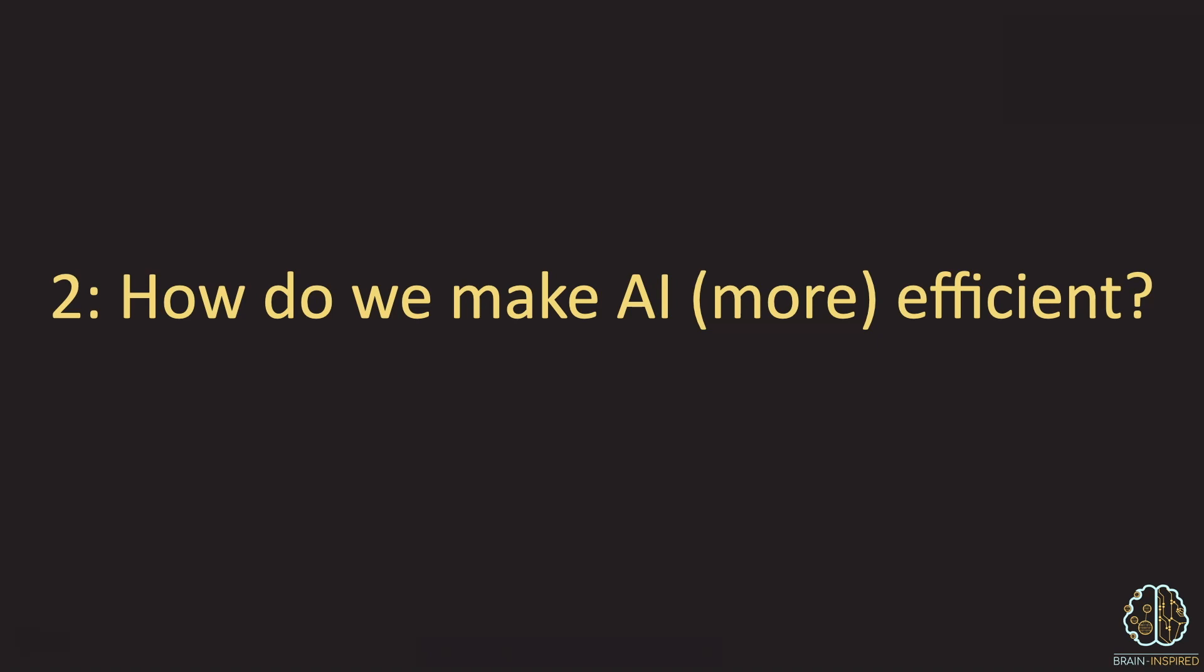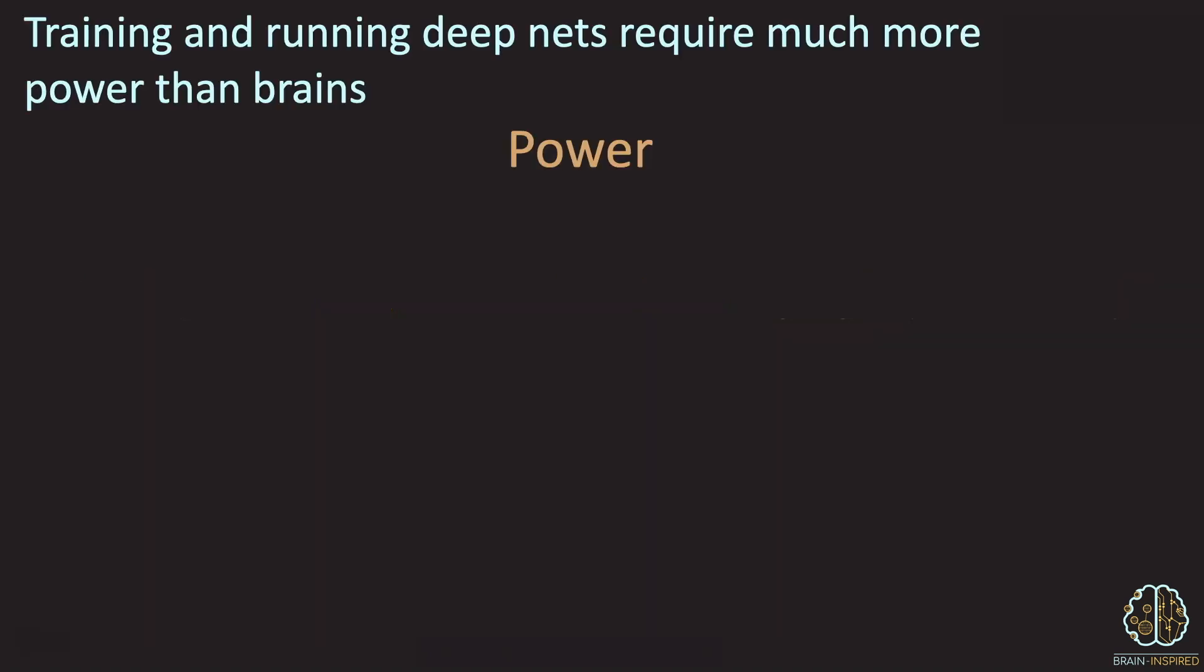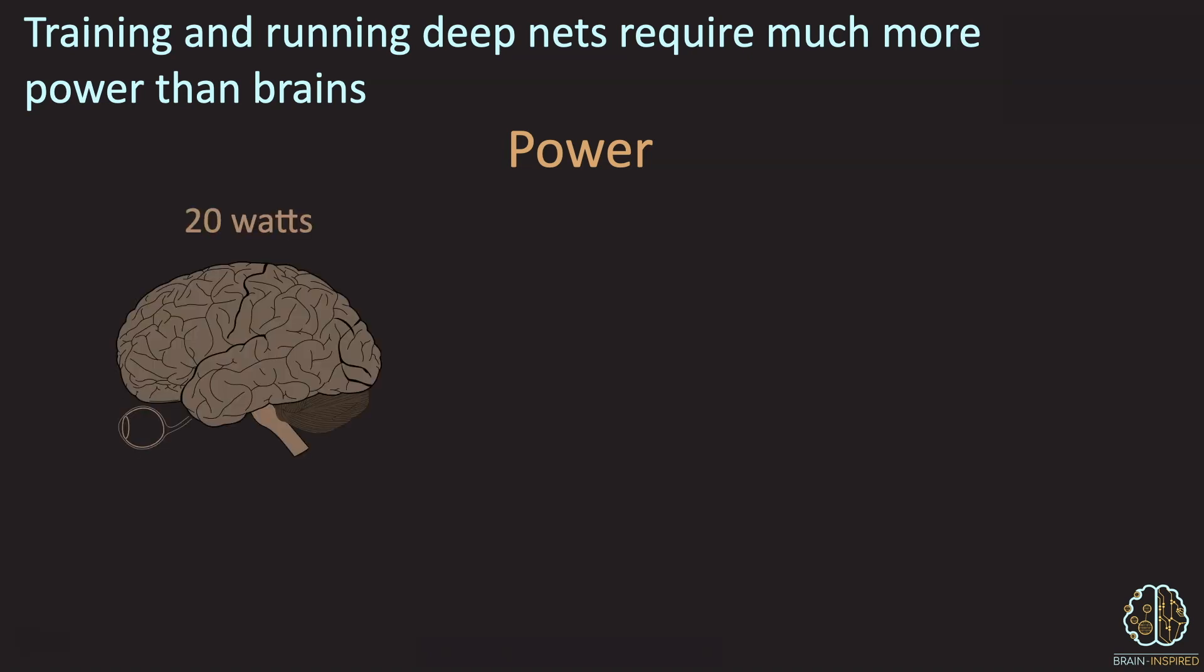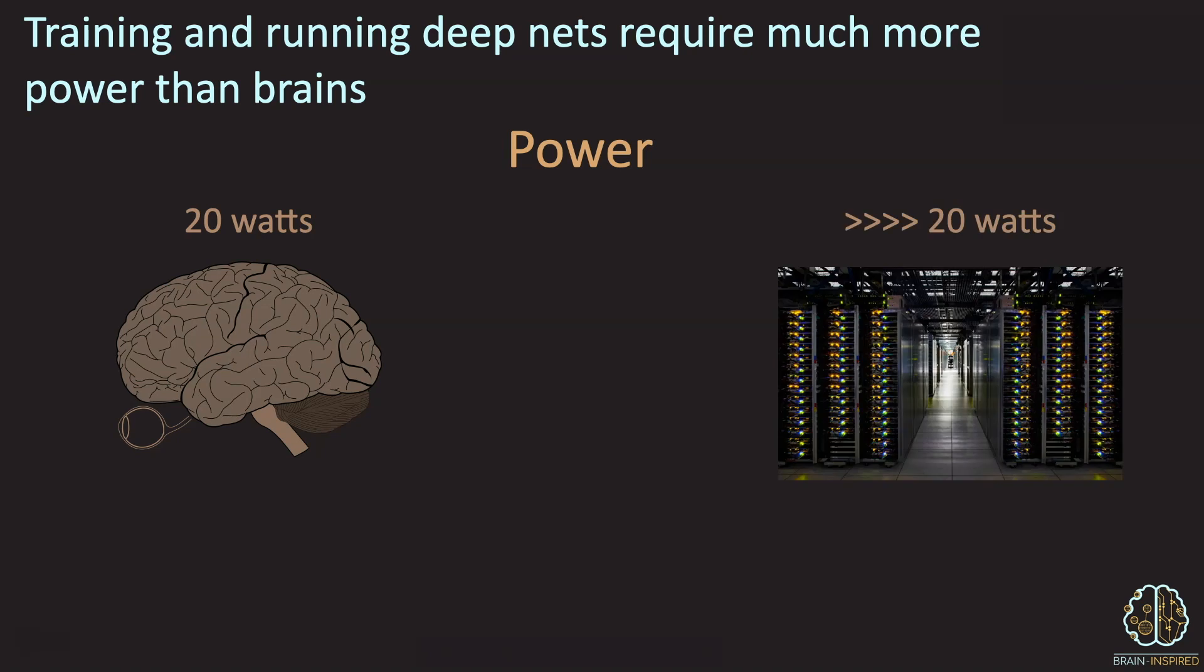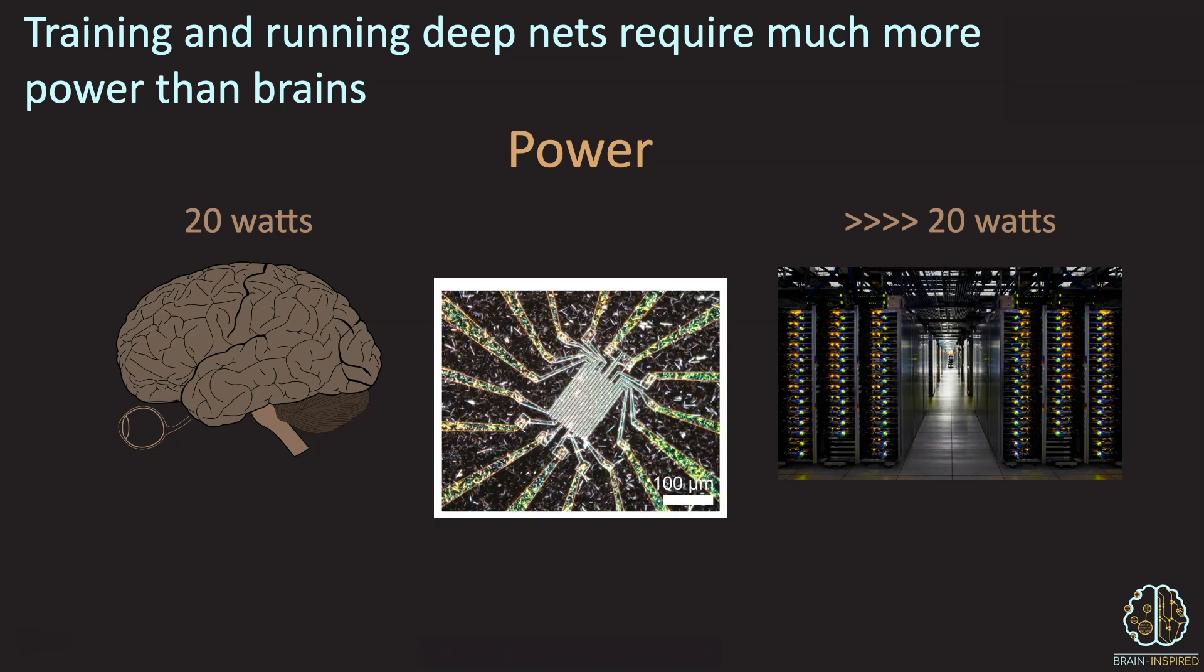The second open question I will pose is, how do we make AI more efficient? And this is really two questions, because there are two ways that I mean efficient here. One sense of efficiency is power. So brains run on very little power, famously about as much as it takes to power a light bulb. Computers that run deep nets use much more power to achieve brain-like results. And because of the concern to reduce power, there are plenty of people working on developing neuromorphic chips that are in part inspired by the low power consumption of brains.